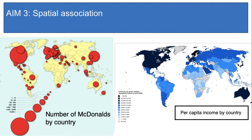This suggests, although again it doesn't prove, that McDonald's and income are somehow correlated. My hypothesis was that wealthier countries have more McDonald's because people there have more money to eat out. I'm still not sure if this is true and I should do more research on it, but these two maps support it.